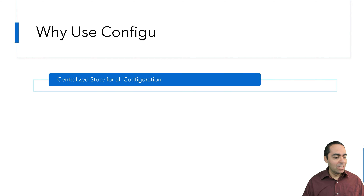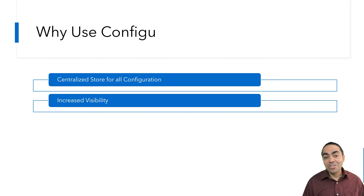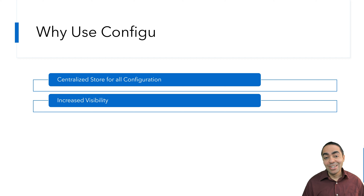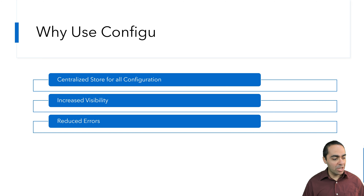So why would you use ConfigU? There are multiple reasons. One of them is to centralize all your configuration in one place. That obviously increases visibility across your teams so they know what configuration has been used in development versus production versus staging and testing. If you're anything like me, I have configuration running in .env files in GitHub or GitLab repos, others for Terraform in other repos, and some for Kubernetes in kubeconfig files. All that is scattered all over the place, and that's just one user. Can you imagine an entire department or multiple teams?